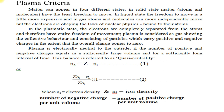In the plasmatic state, the electrons are completely separated from the atoms and therefore have entire freedom of movement. Plasma is considered as gas showing collective behavior and consisting of particles which carry positive and negative charges, such that the overall charge comes to zero. Plasma is electrically neutral to the outside if the number of positive and negative charges is equal in a sufficiently large volume and for a sufficiently long interval of time. This balance is referred to as quasi-neutrality, and N_e = Z × N_i. This is equation number one, and Z·N_i minus N_e upon Z·N_i is very much less than one — equation number two.